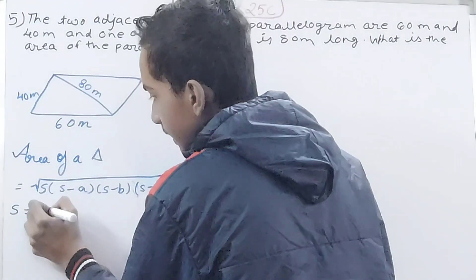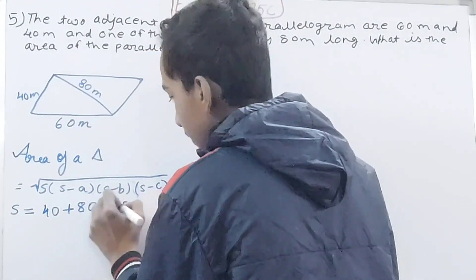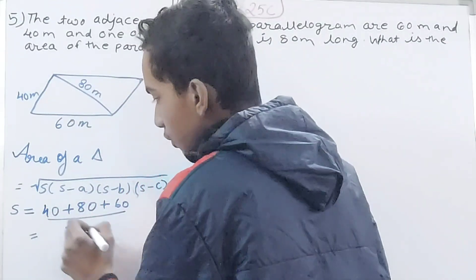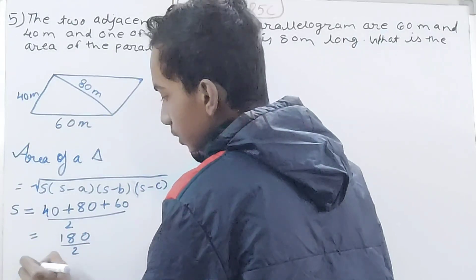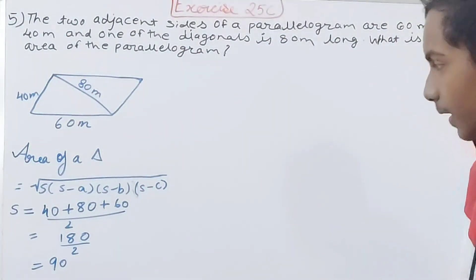Let's calculate s. For this, we will add all the sides: 40 + 80 + 60 and divide by 2. This is 180 by 2, so s is coming to be 90. That is the value of s.